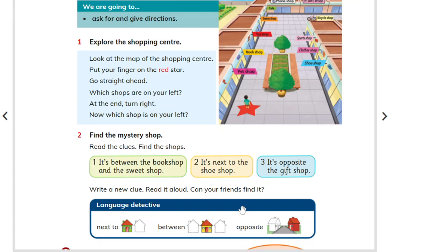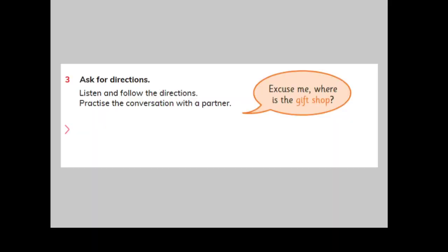Okay, that's it for today, Second Standard. Have a lovely day, enjoy yourself, and I'll see you tomorrow. Bye. Track 24: Excuse me, where is the gift shop? Go straight ahead, then turn right at the corner. It's opposite the bicycle shop. Thank you very much.